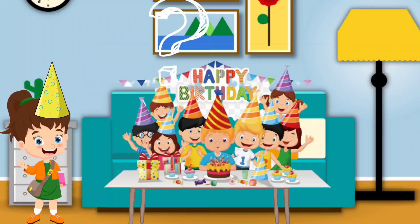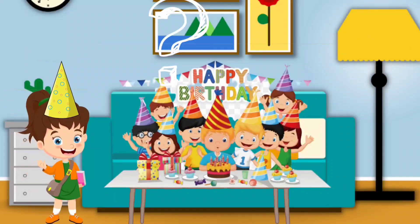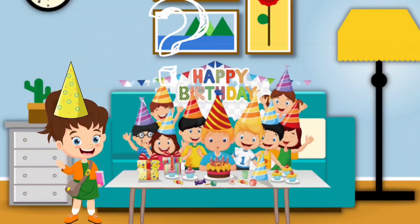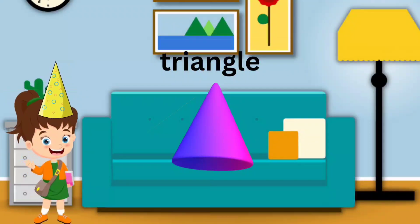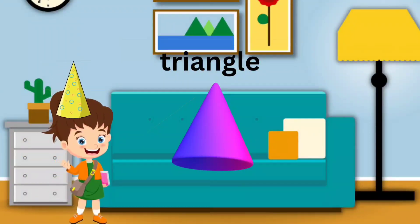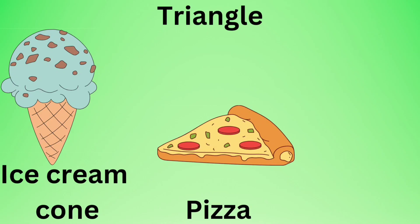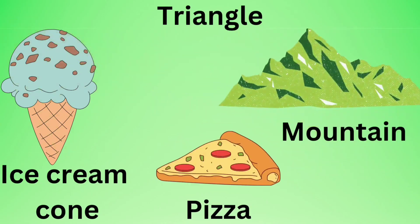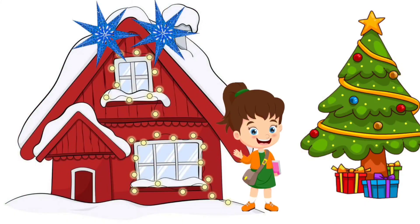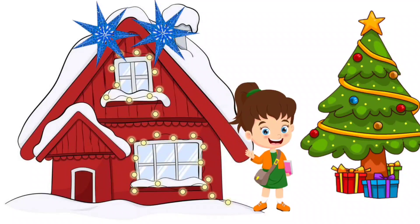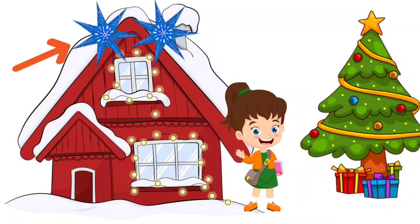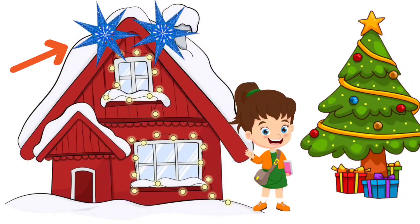Hi, we are at a birthday party. Look, there is a cap on my head. What shape is it? Yes, it's a triangle shape. Some examples: ice cream cone, pizza, mountain. These all are triangle shapes.